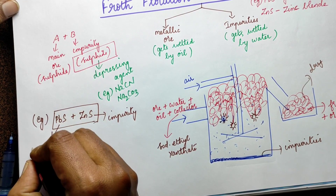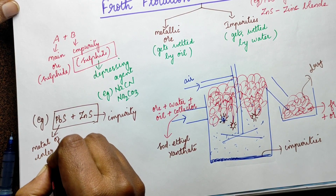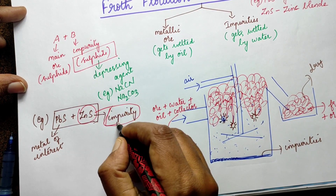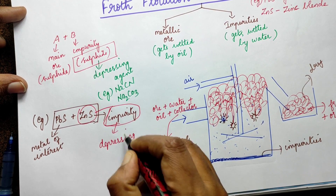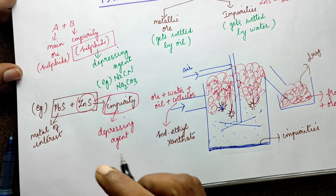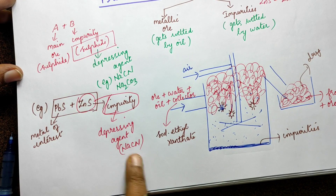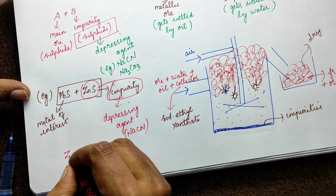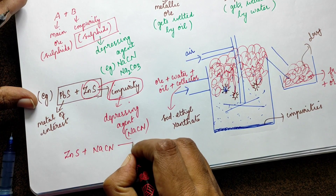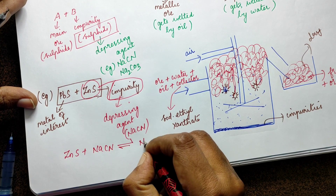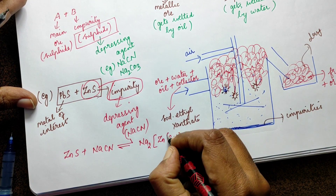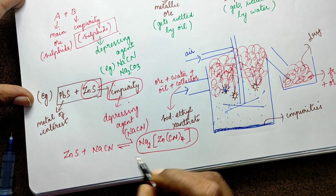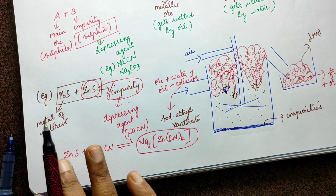Let's get started with the depressing agent mechanism. For the metal of interest, we don't depress it — we depress the impurity. For example, if zinc sulfide is the impurity, we add a depressing agent — sodium cyanide. Sodium cyanide reacts with zinc sulfide to form a zinc complex: ZnS + NaCN reacts to give Na2[Zn(CN)4]. Since this complex forms, the zinc sulfide no longer goes with the froth. Only the lead sulfide goes with the froth.